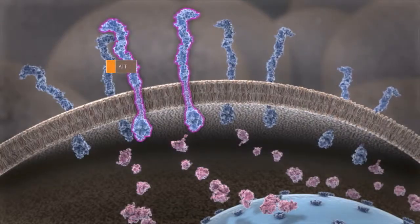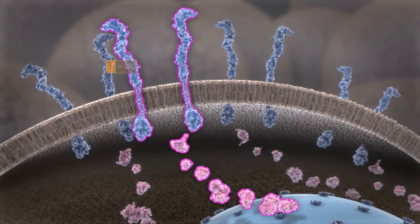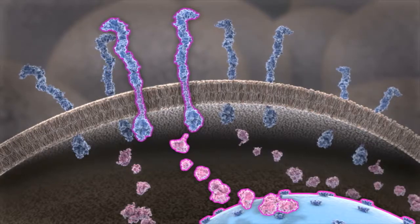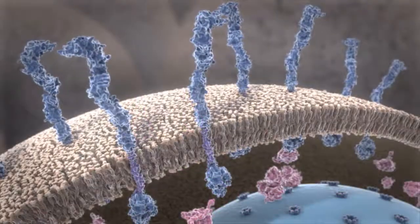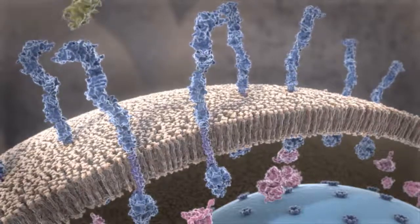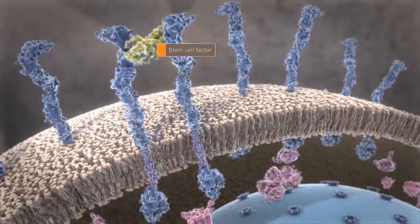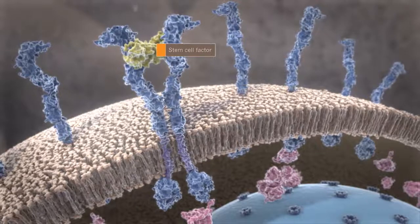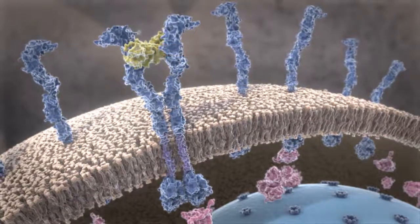KIT functions by activating signal transduction cascades that influence downstream processes. Under normal conditions, KIT activation requires binding of its ligand, stem cell factor, which induces receptor dimerization and structural changes in the KIT receptor.